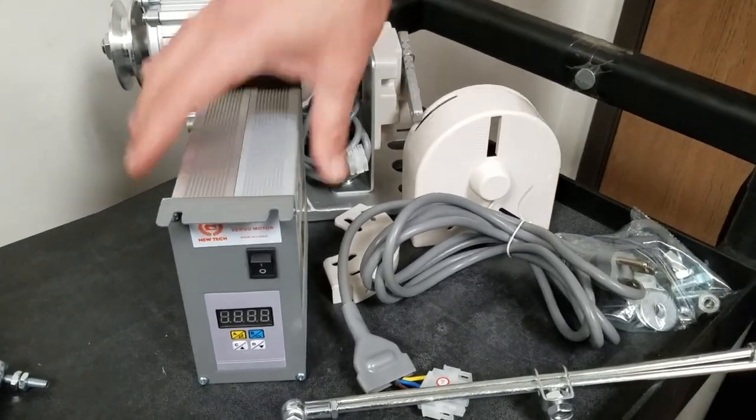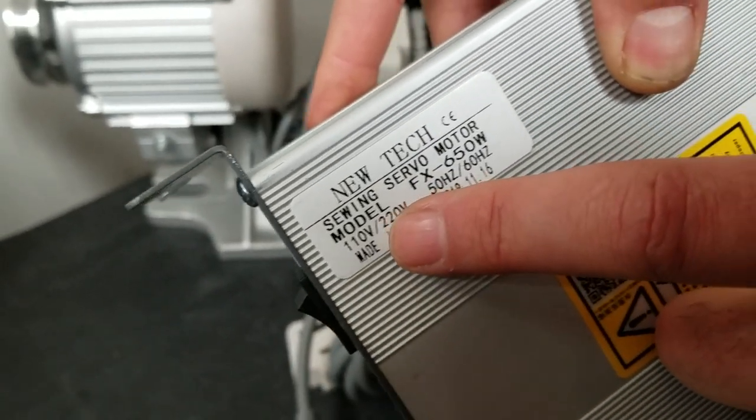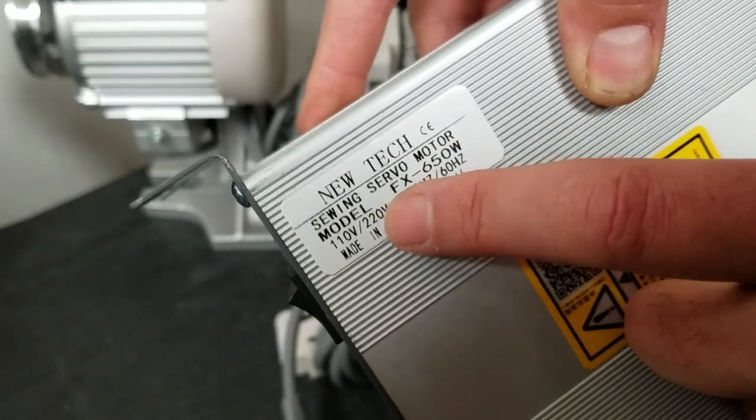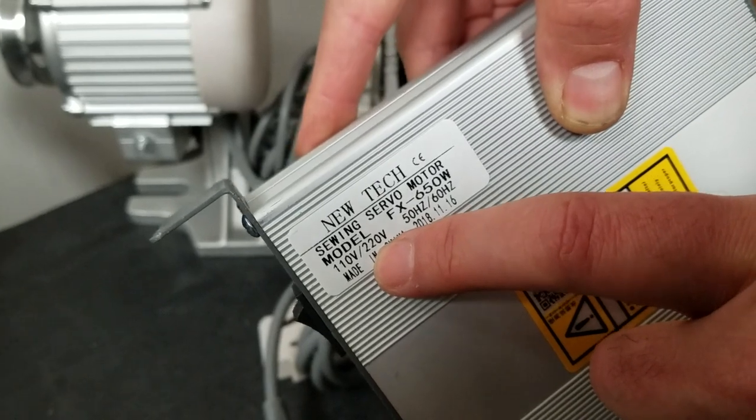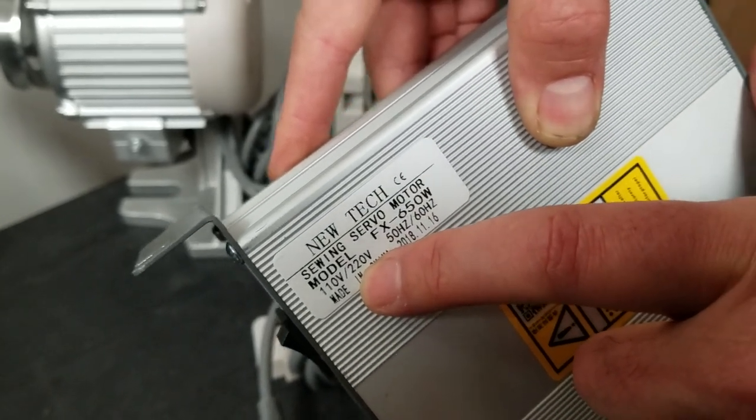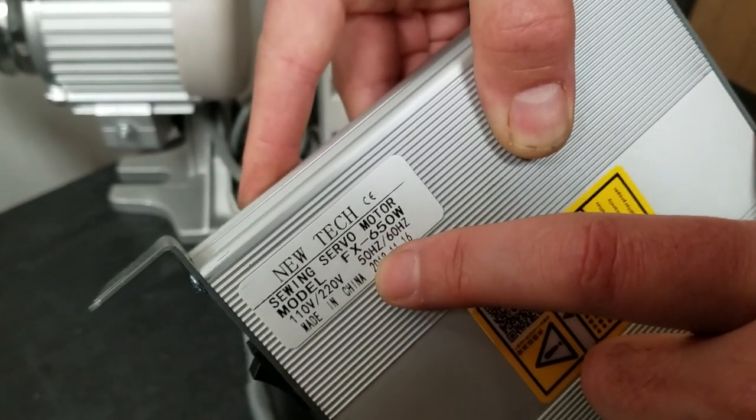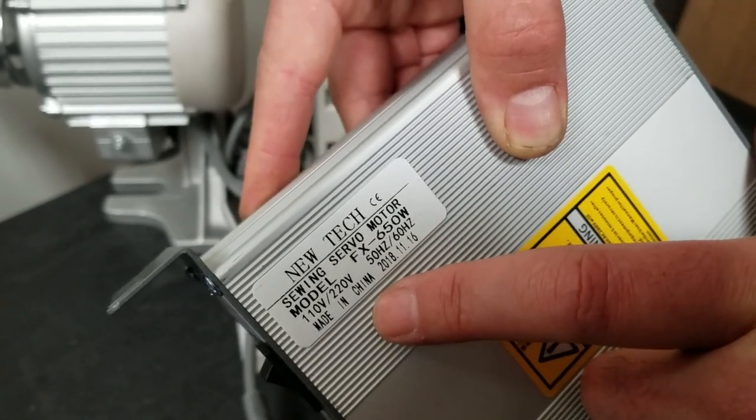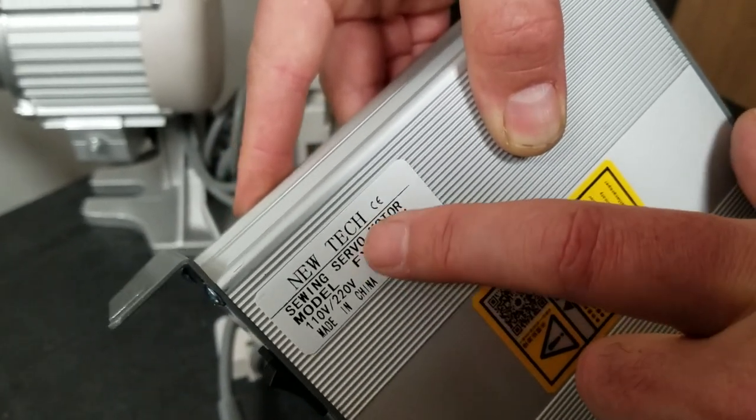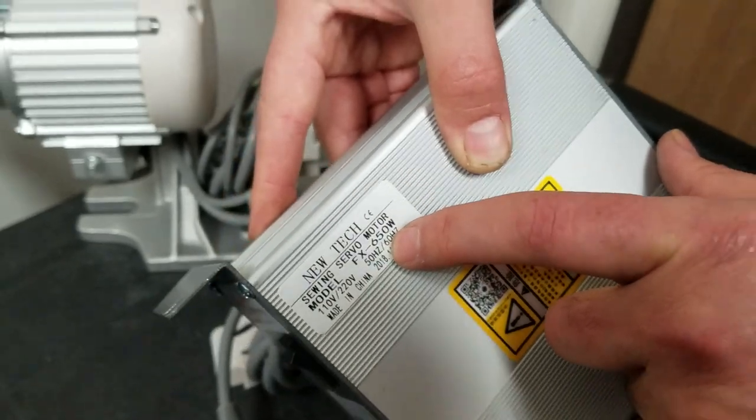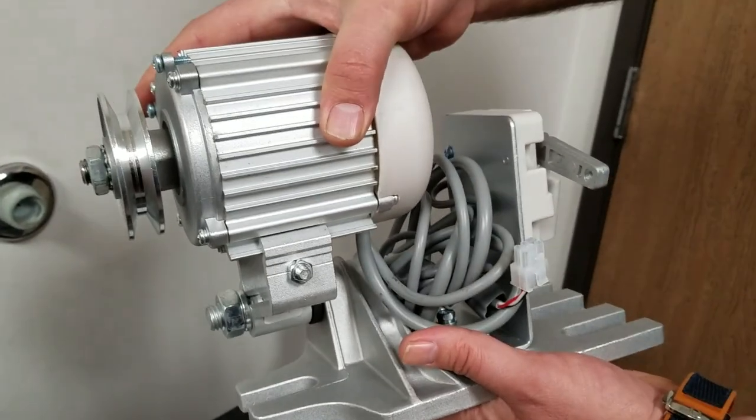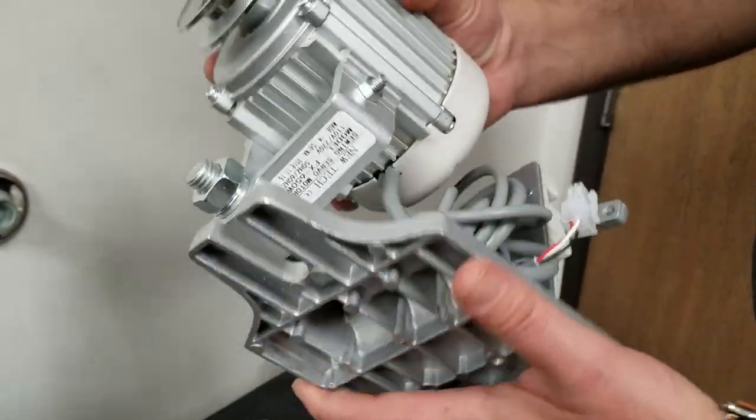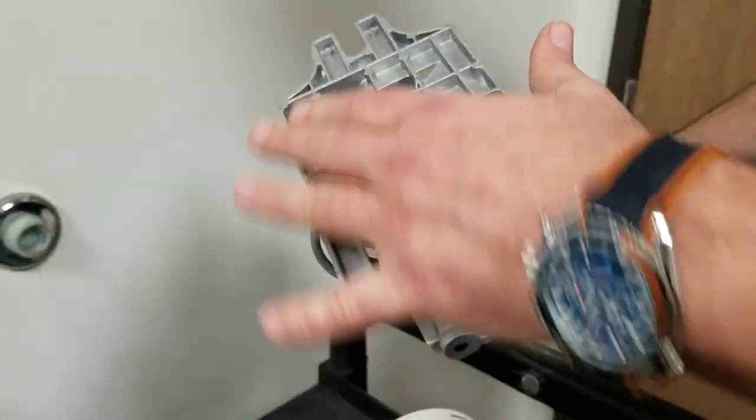First of all, it's a New Tech sewing servo motor, the model is FX 650, 110 to 220 volt. I don't think anybody's going to use 220 volt here in USA. It's obviously made in China, and it's 650 watt. It's more powerful than this one, much smaller, much lighter. It works the same way, the same bracket, the same thing.